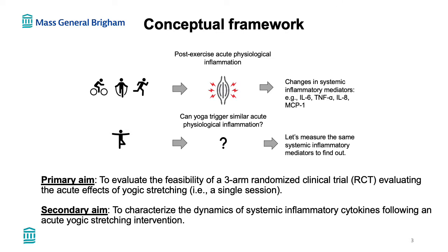From the literature, we know that one session of aerobic exercise of at least an hour causes micro-lesions in the muscle, connective tissue, and fascia. These lesions can trigger a transient physiological acute inflammation that we can detect systemically by measuring changes in cytokine levels.